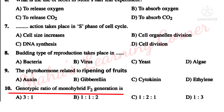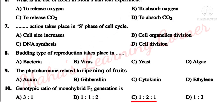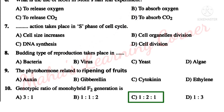Genotypical ratio of monohybrid F2 generation is — Option A: 3:1. Option B: 1:1:2. Option C: 1:2:1. Option D: 1:3. Correct answer: Option C — 1:2:1. The genotypic ratio is 1:2:1, and the phenotypic ratio is 3:1.